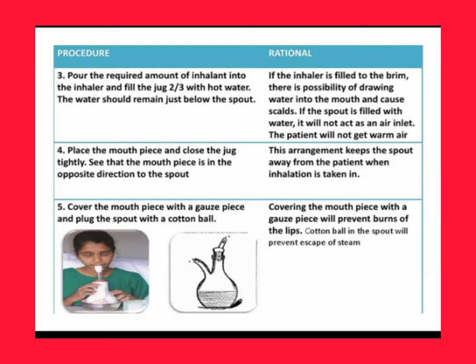Fourth, place the mouthpiece and close the jug tightly. See that the mouthpiece is in the opposite direction to the spout. The mouthpiece is a short length pipe. Always make sure that the direction of the mouthpiece is opposite to the spout.